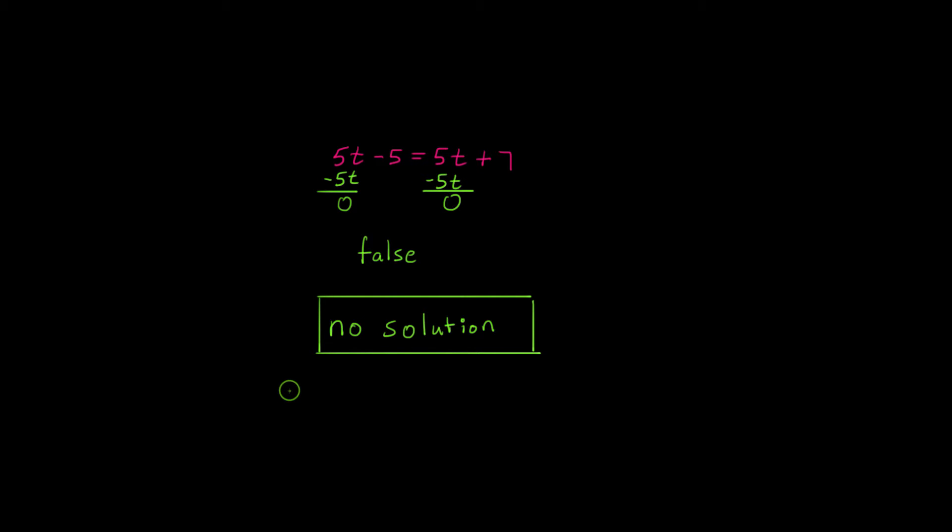So let's take a look at an example. Let's pretend I want to try substituting 2 in for t. So let's see what happens. That would be 5 times 2 minus 5, and we're going to see if it's equal to 5 times 2 plus 7. Well, 5 times 2 will give me 10 minus 5 on this side of the equation.